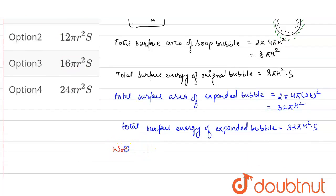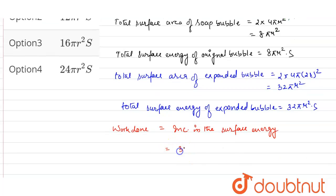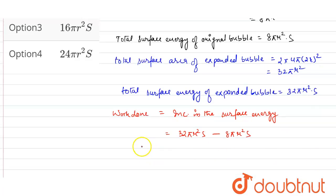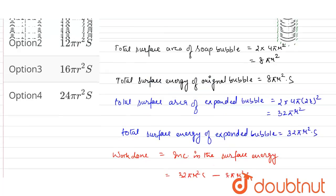The work done in the process equals the increase in surface energy, which is calculated as 32πr²s − 8πr²s, giving W = 24πr²s.